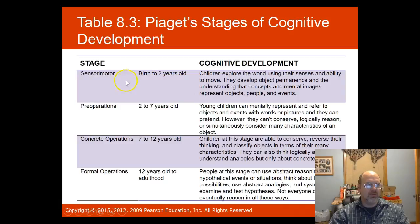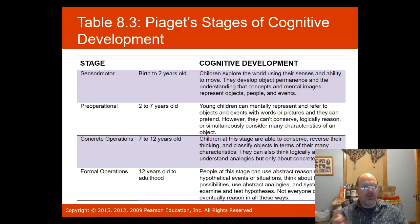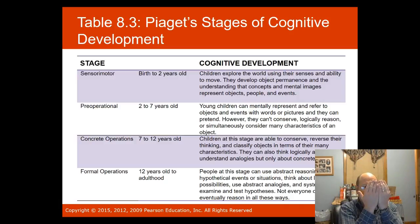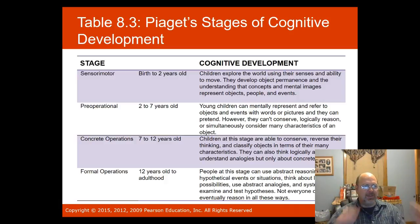The first stage is sensorimotor, from birth to two years old. Children explore the world using their senses and motor abilities — everything goes in the mouth. They develop object permanence, an understanding that objects, people, and events continue to exist even when not seen. Before object permanence develops, peekaboo is exciting — when you cover your face, you no longer exist to the baby, and reappearing is thrilling.